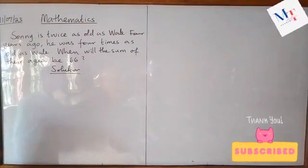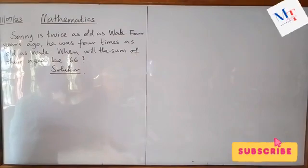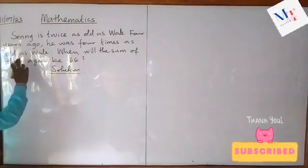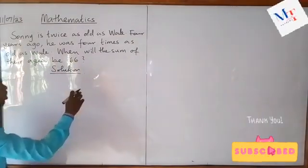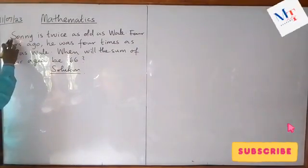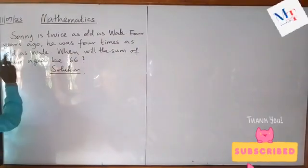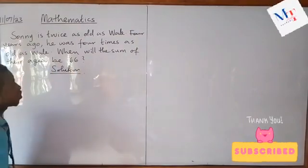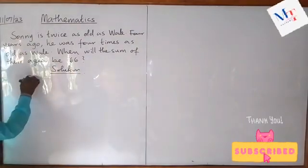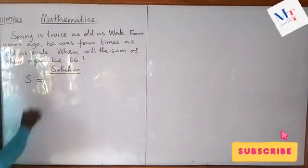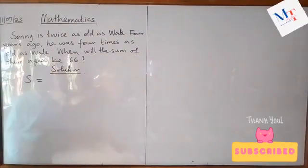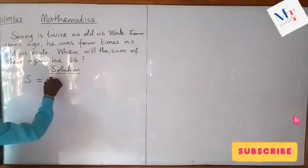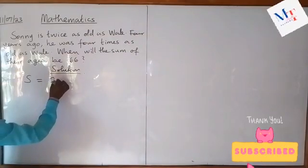For the first statement, Sonny is twice as old as Wally. In mathematics, we represent Sonny with a letter and Wally with a letter, using the first letter of the name. For Sonny, we let Sonny be S, and for Wally, we let that be W. So Sonny is twice as old as Wally means S equals two W.